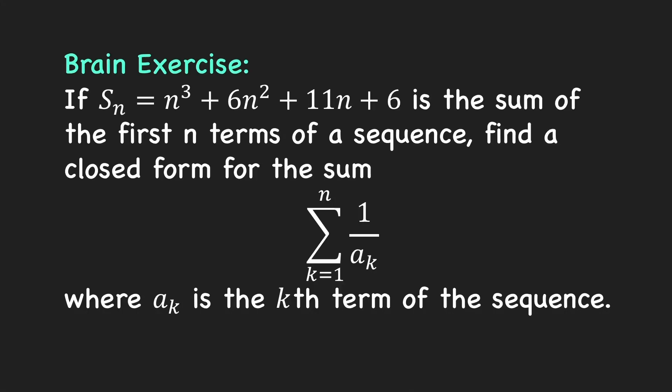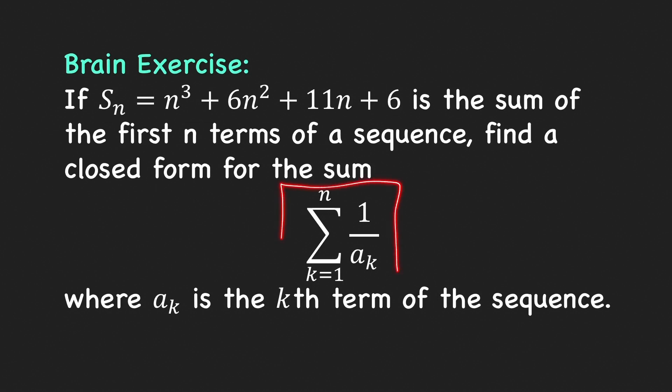Let me show how to solve this problem, but before that let me give a shoutout to Marvin Cato who solved this problem correctly and posted his answer in our Facebook page. Here we have the sum of the first n terms of a sequence: n cubed plus 6n squared plus 11n plus 6, and we want to find a closed form for this sum.